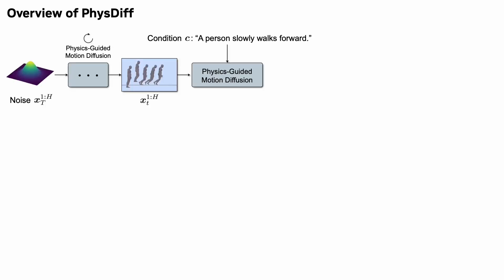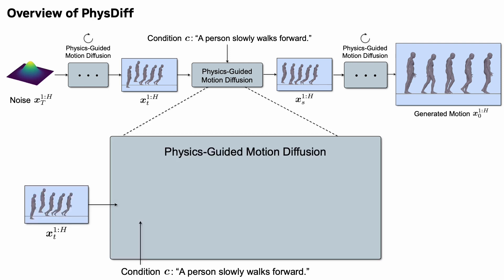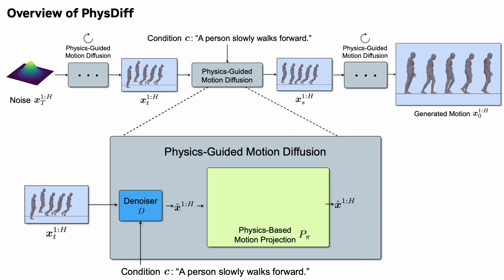Here is an overview of our model, PhysDiff. It leverages a series of physics-guided motion diffusion steps to map noise and conditions into the generated human motion. In each physics-guided diffusion step, a denoiser network is used to first denoise the motion into an estimate of the clean motion. We then use a physics-based motion projection module to project the denoised motion into a physically plausible motion.